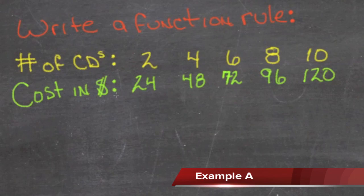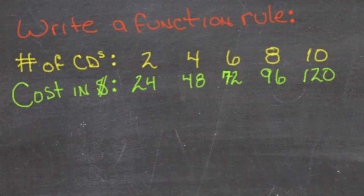We're asked to write a function to describe the cost based on the number of CDs. If we let our output value, our overall cost, be y, then y is going to be equal to the number of CDs times some value.